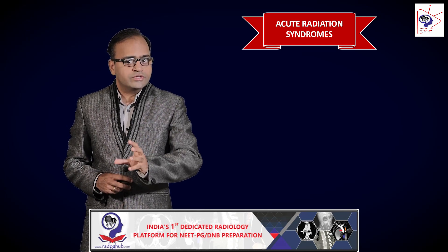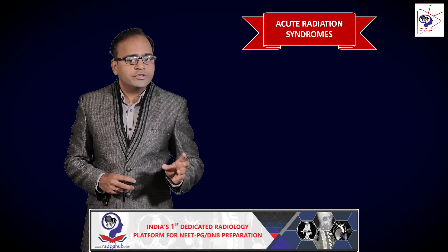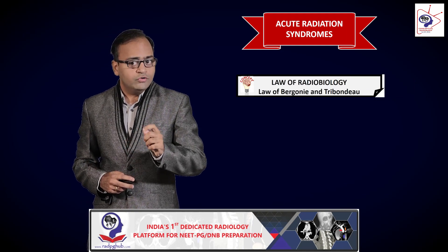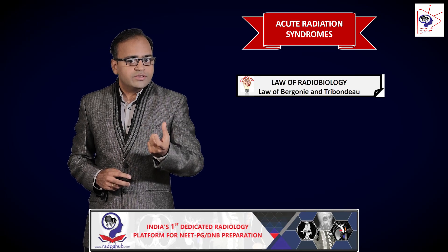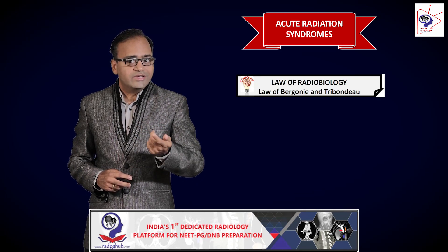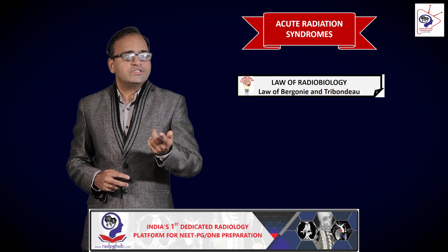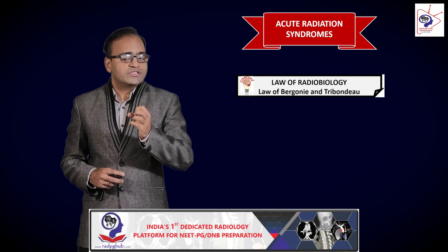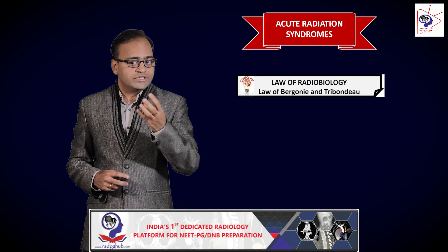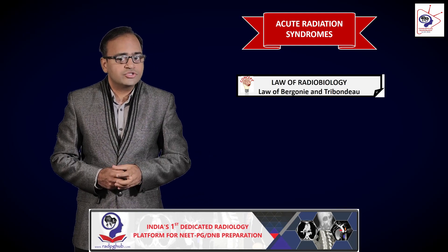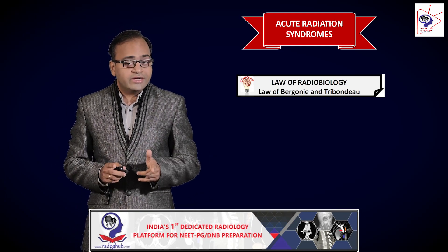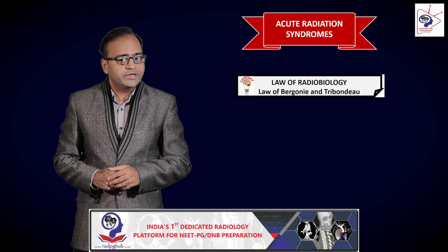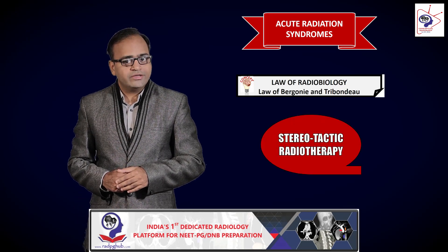I have just said that the CNS is radio-resistant, but how is it that radiotherapy is an important treatment modality for brain tumors? Think of the law of Bergonie and Tribondeau — a tumor is a mass of actively proliferating cells, and the law states that whenever a cell is in active mitosis it is sensitive to radiation. So in the CNS, the tumor cell is sensitive to radiation because it is actively dividing, whereas the normal CNS tissue is relatively radio-resistant. This is in fact a therapeutic advantage. A specific type of radiotherapy used for treatment of brain tumors is called stereotactic radiotherapy.